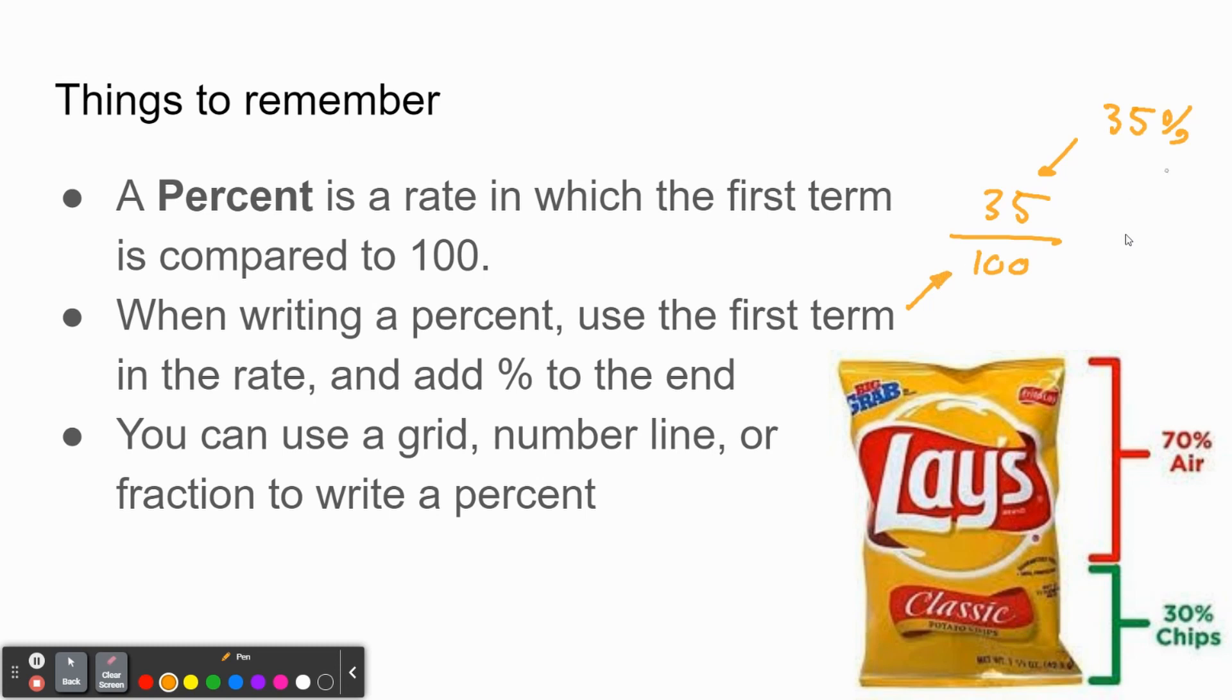Finally, you can use a grid, a number line, or a fraction to write a percent. You can also use decimals as we saw from the 'what is a percent' part. Out of those three, I'd be curious to see if you can comment in the comments which one you think is most common. Do we use grids, number lines, or fractions most often when using percentages? Pause the video if you need to do that or if you need to write any of these down.